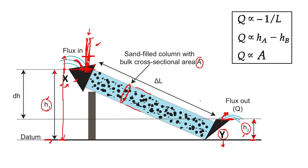You can imagine that if you apply a lot of pressure from point Y, the water flow starts in the opposite direction. In Darcy's Law, water flows from a higher head to a lower head. So if H1 has a higher value, the water will flow from X to Y — from higher energy towards lower energy. But if pressure is applied from the Y direction, the head at Y becomes higher than the head at X, causing reverse flow.